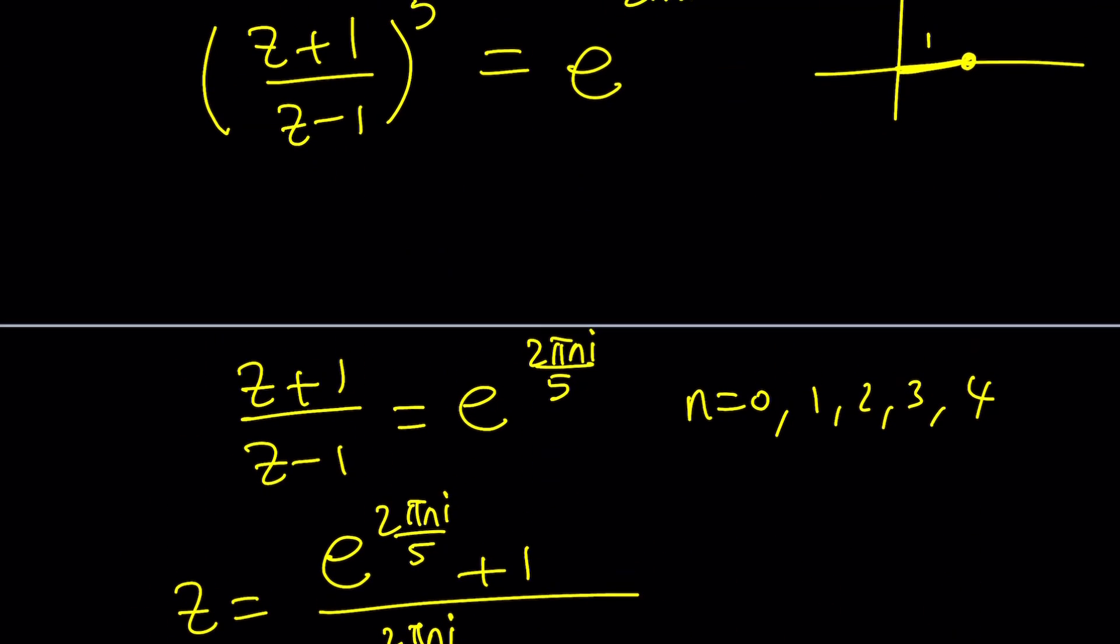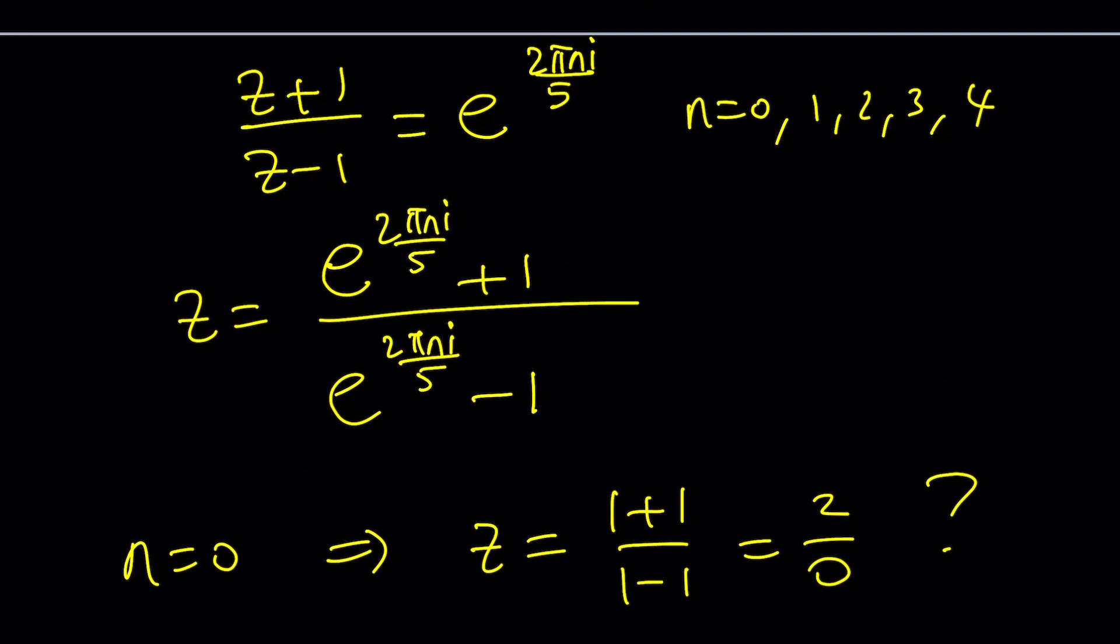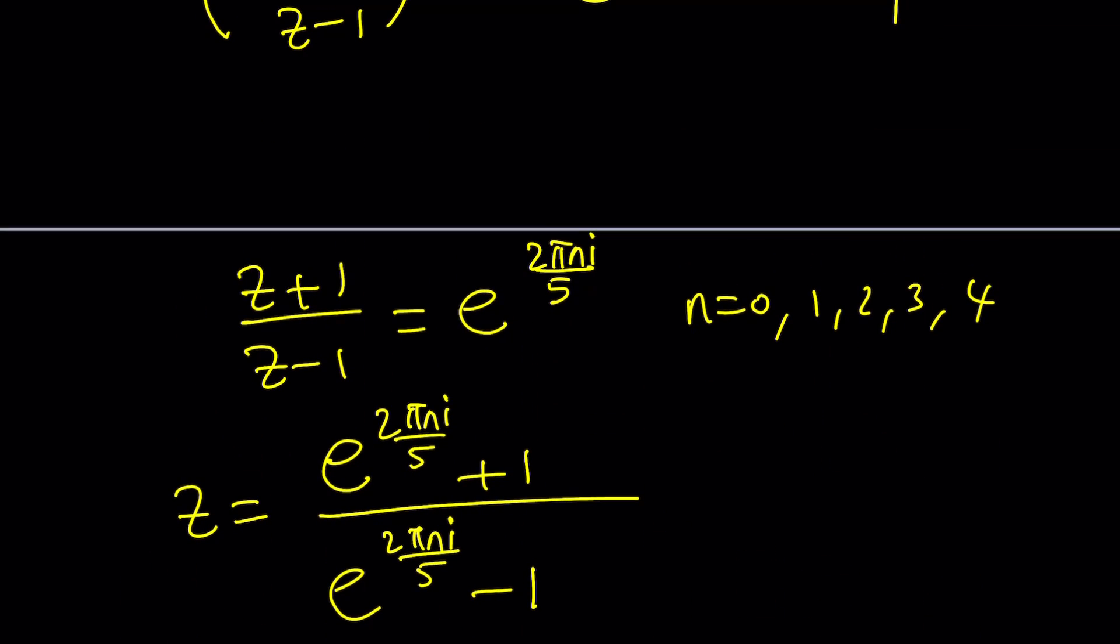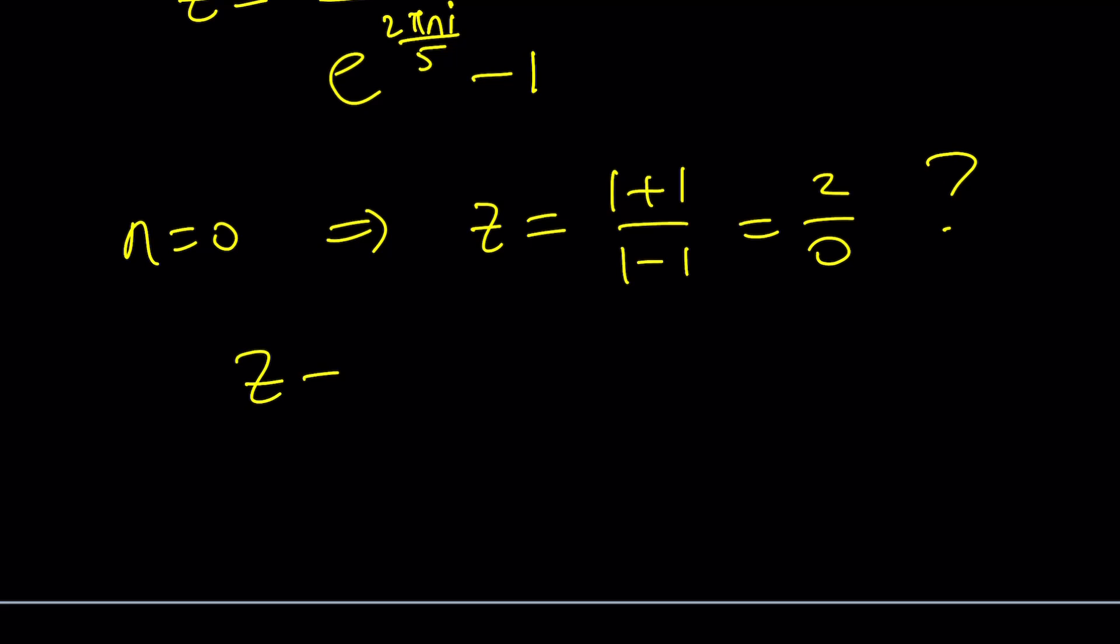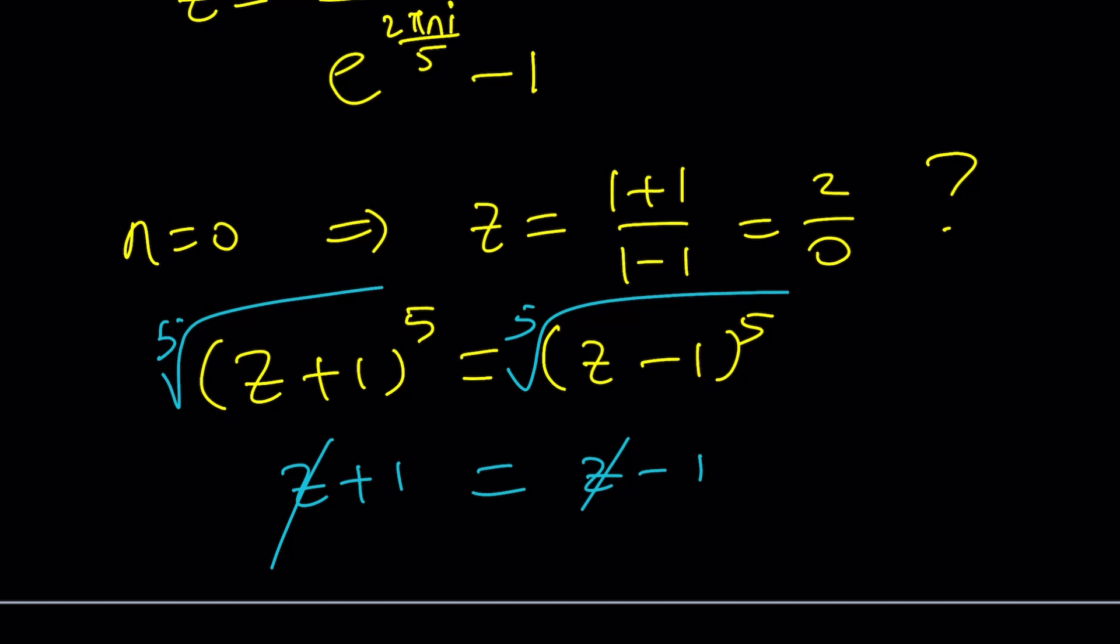If you go back to the original equation and replace n with 0, you're basically going to get the following. It's basically equivalent to removing the 5th power. I know some people are going to say, okay, I'm going to take the 5th root on both sides. And then this is going to be z plus 1 equals z minus 1. Z cancels out. 1 equals negative 1. Nonsense. There are no solutions.